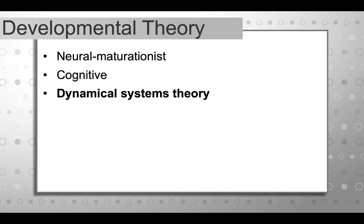The neural maturationist theory is what pediatric physical therapy was really built upon, and it falls on the nature side of the debate. Neural maturationist theory said that development was driven by brain development — that the brain was hardwired to develop in a certain way. So our behavior and motor development happens in a very hierarchical, linear, predictive, and consistent way based on brain development.